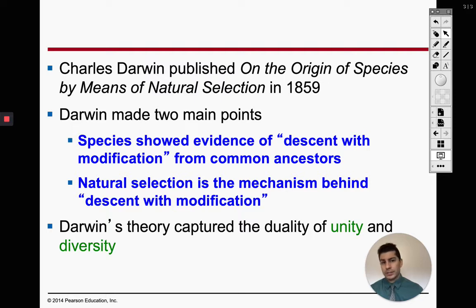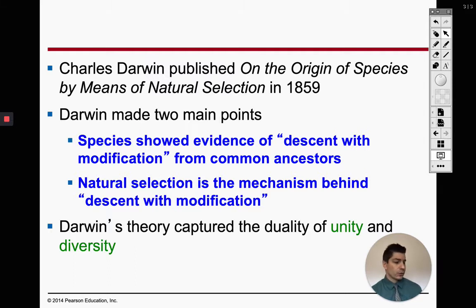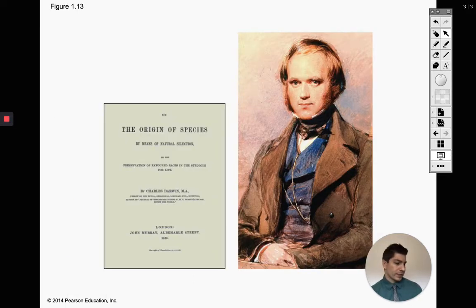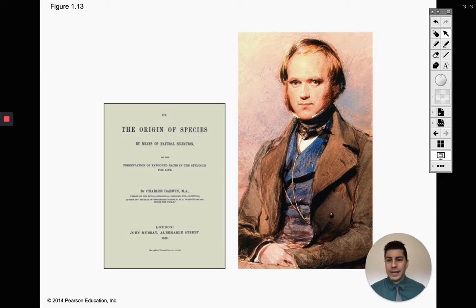Darwin was actually not the first person to bring about the idea of evolution. Rather, Darwin was the first one to give a mechanism behind evolution. Other people before Darwin said there's evolution, but Darwin was the first one to say, hey, evolution does exist — let me show you how it exists. That's what separates Darwin from previous scientists. His book, The Origin of Species, is interesting because throughout the whole book he never mentions the word evolution — he always refers to it as natural selection. But he did offer a mechanism for evolution to occur.